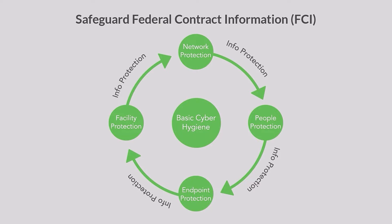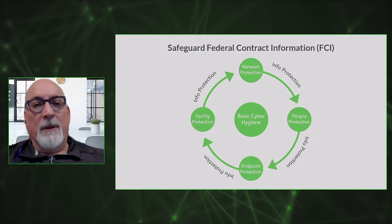This diagram is intended to show that there is information being protected — that's the arrows that go around — and it's being protected in four different ways. So it's being protected on your network. You would expect the network that you're accessing or saving information on, in this case FCI. Imagine you get an email with contract information and now you've got to save it somewhere — it's in a folder, probably on your network. And it's being transmitted through your network connections, wirelessly, wired, or in the cloud. So that network needs to be protected, and there are specific requirements for your network. Some of the 17 are related to the network.